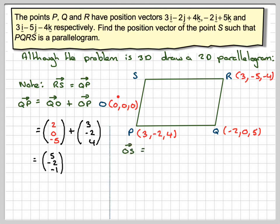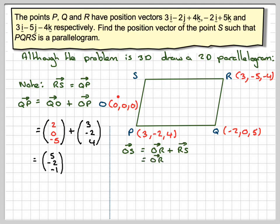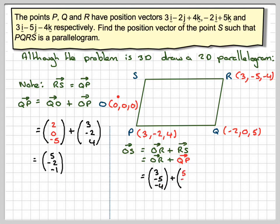Now I need to find the vector OS — going from O to S. Another way of going from O to S would be OR plus RS. Now I said that RS is the same as QP, and I've just calculated QP. So OS equals OR plus QP. OR is just the position vector of R, which is (3, −5, −4), and QP is (5, −2, −1). Adding these gives (3+5, −5+(−2), −4+(−1)) which is (8, −7, −5).